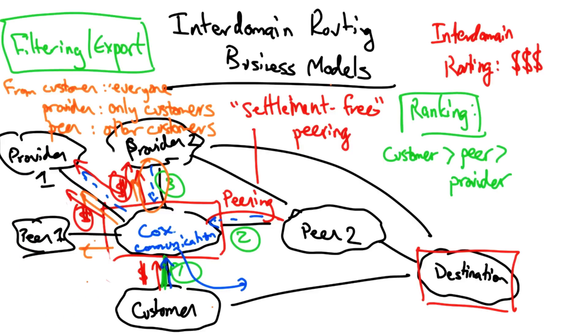As it turns out, if every AS in the internet followed these rules exactly, then routing stability is guaranteed. You might wonder: isn't routing stability guaranteed already? It turns out that it isn't.